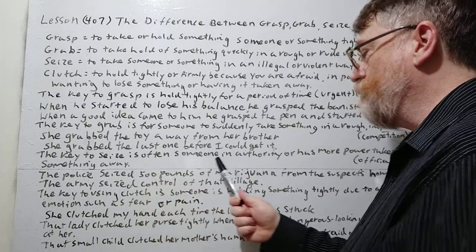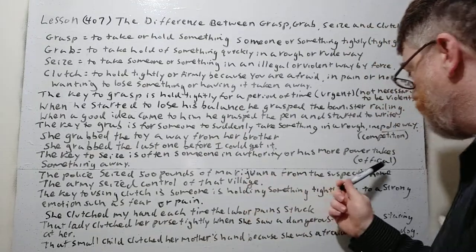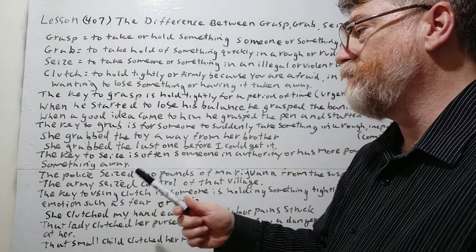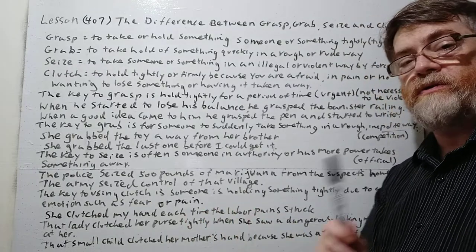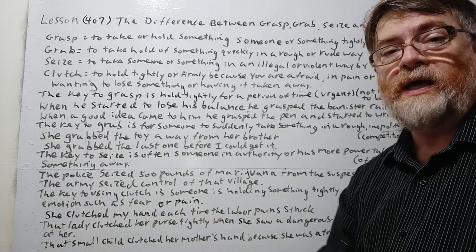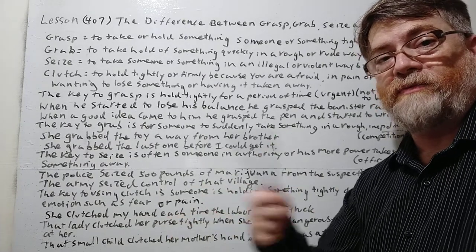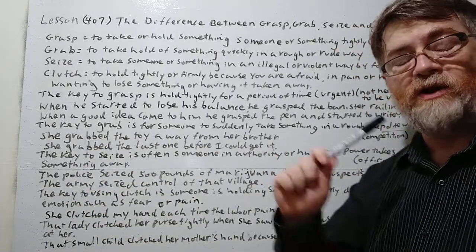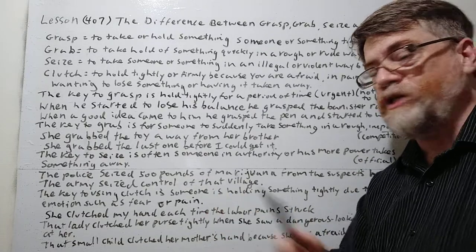The key to seize is often someone in authority, someone with more power, or an official who takes something. For example: the police seized 500 pounds of marijuana from the suspect's home. They took it, and they are definitely from an authority or a position of power, so seize would most likely be used in this sort of way.